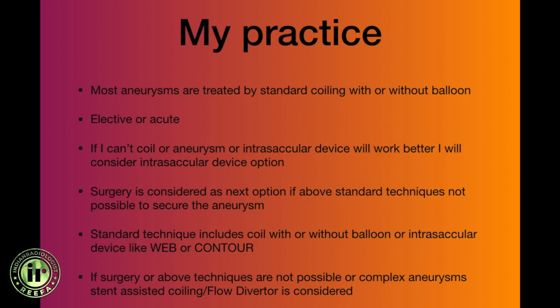Let me tell you what my practice is first. I would treat aneurysms with coiling or with balloon-assisted coiling — that's what I do most of the time, elective or acute. I prefer coiling with balloon and use that approach for about 90 percent of aneurysms in my practice. If I can't coil an aneurysm with a balloon, then I will use intrasaccular devices like WEB or Contour, and if I can't do that, I'll consider surgery.